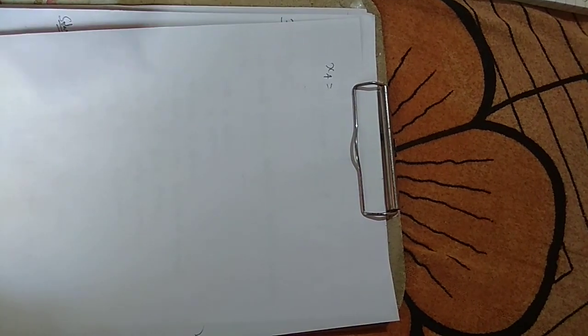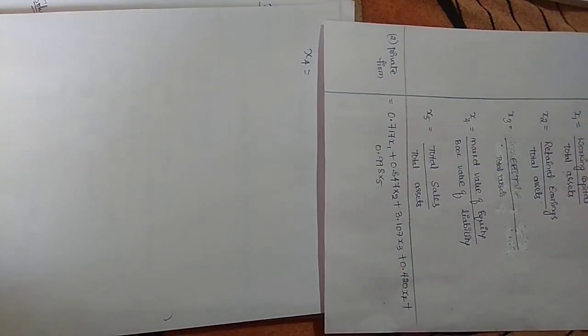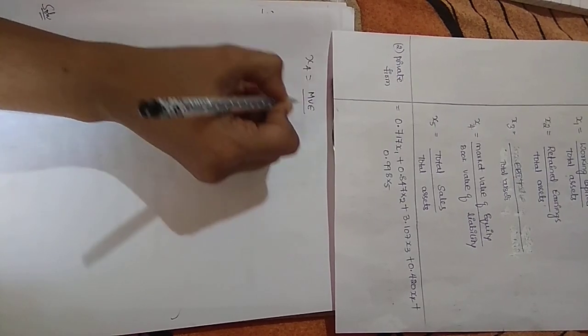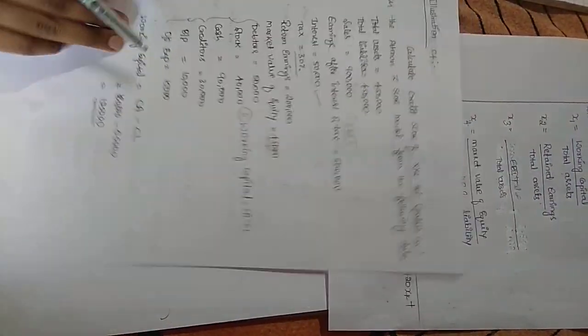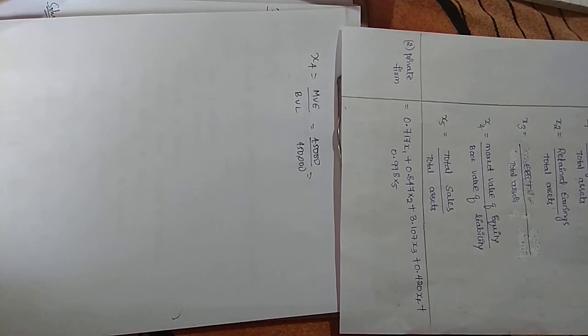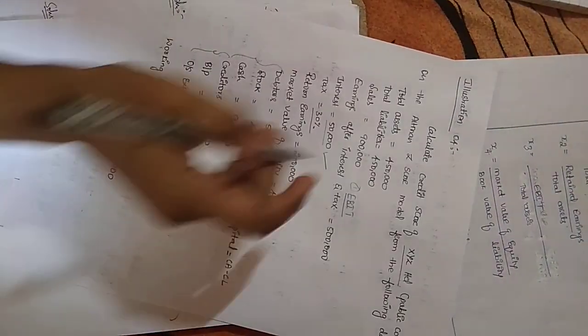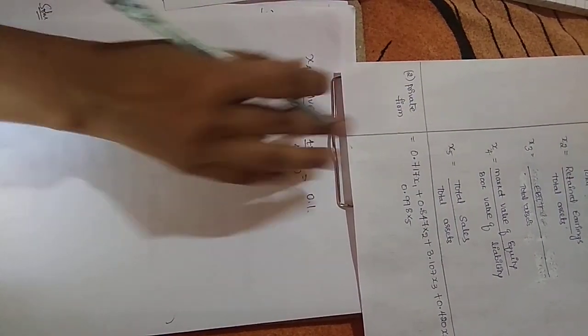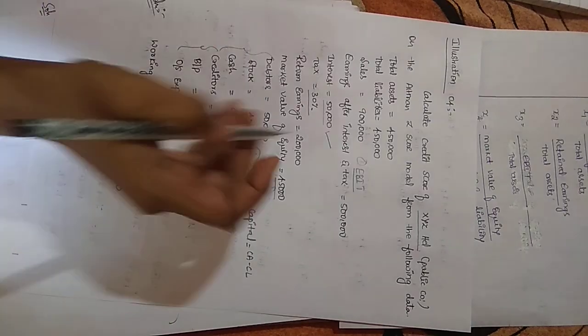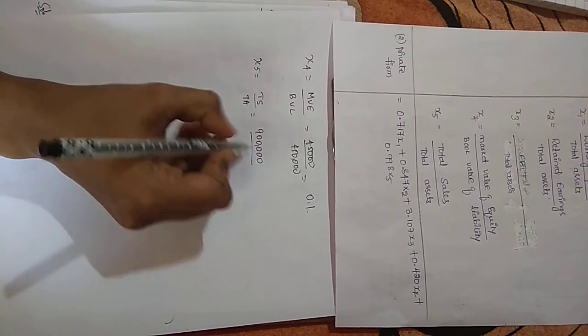X4 is market value of equity divided by book value of equity (total liabilities). Market value of equity is 45,000 and total liabilities is 4,50,000, so 45,000 divided by 4,50,000 equals 0.1. For X5, total sales divided by total assets: 9,00,000 divided by 4,50,000 equals 2.